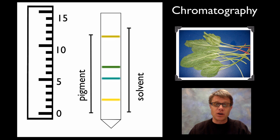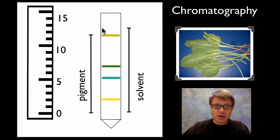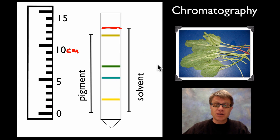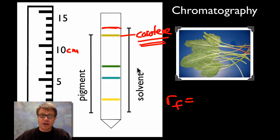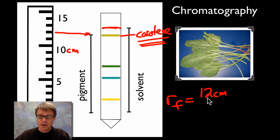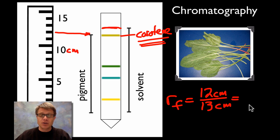The solvent is kind of hard to see but you'll see a faint line — that's the liquid moving up. We can measure the distance the solvent moves in centimeters, and then we'll see each of the different pigments move up a different amount. One thing you sometimes have to calculate is the RF value — the ratio of the distance the pigment moved divided by the distance the solvent moved. For example, if the pigment moved 12 cm and the solvent moved 13 cm, you divide 12 by 13 and get a ratio of about 0.9.